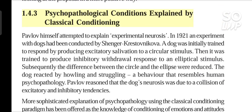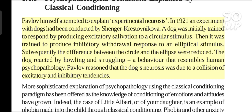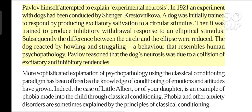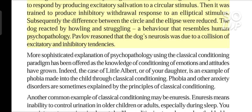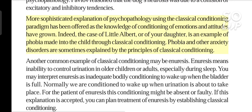Pavlov himself attempted to explain experimental neurosis. In 1921, an experiment with dogs was conducted by Shengel Krestovnikova. The dog was initially trained to respond by producing excitatory salivation to a circular stimulus, then trained to produce inhibitory withdrawal response to an elliptical stimulus. Subsequently the difference between the circle and the ellipse was reduced. The dog reacted by howling and struggling — a behavior that resembles human psychopathology. Pavlov reasoned that the dog's neurosis was due to a collision of excitatory and inhibitory tendencies.